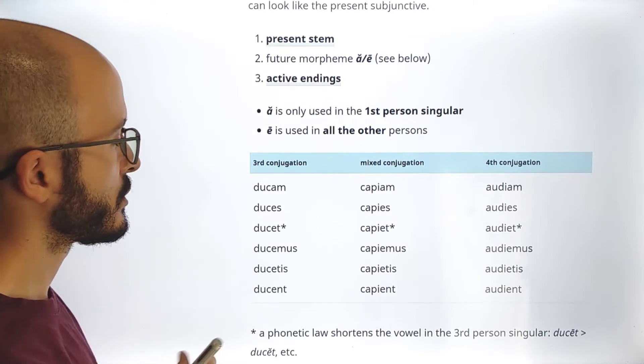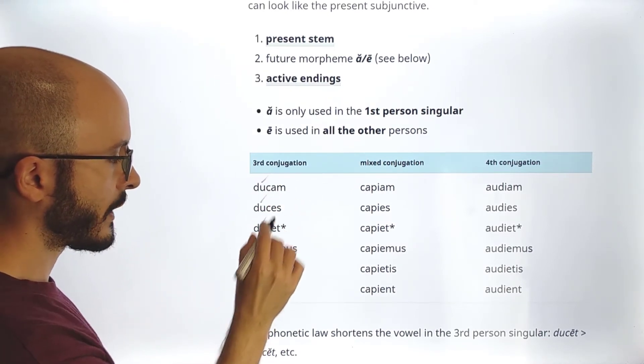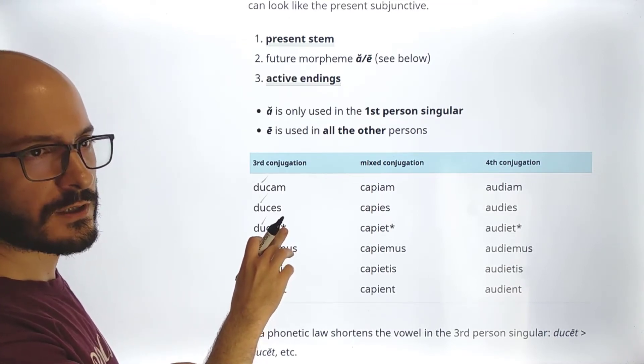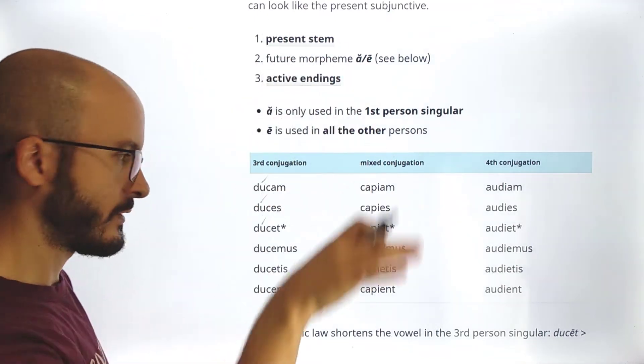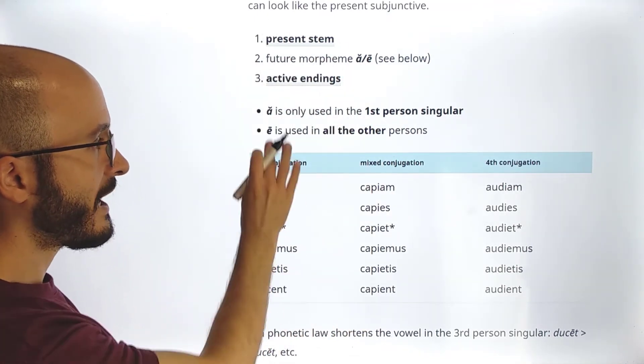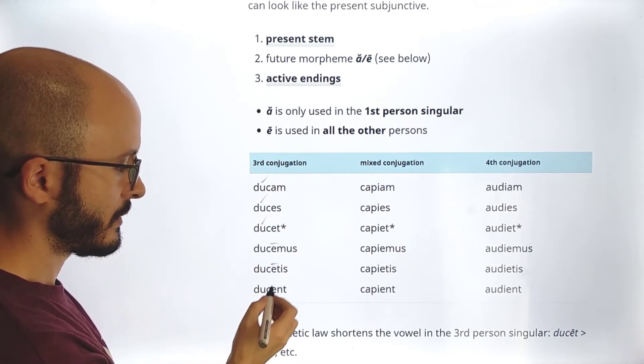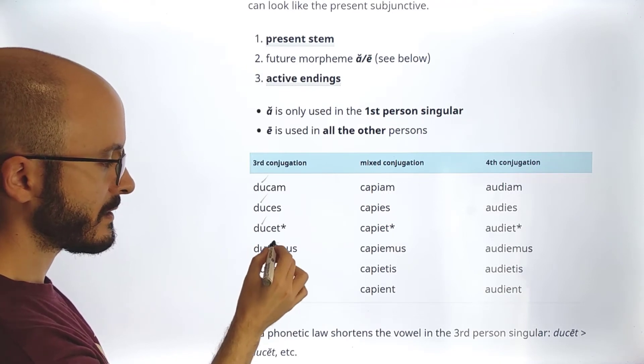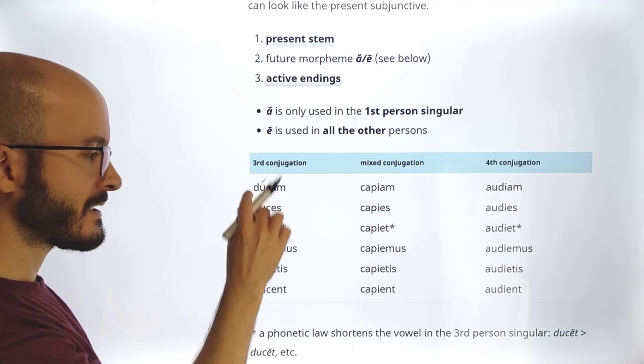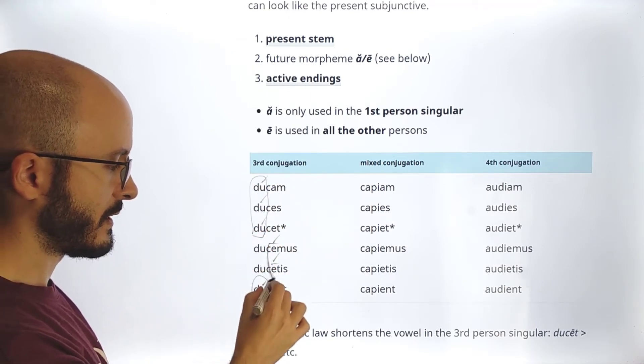So for example, here we have this. So we have ducam, duces, ducet. For this asterisk, you really don't have to worry, okay? This is for a super very future reference. So ducam, duces, ducet. Now here we have this E is this E. So it is ducemus, ducetis, ducent. So here we see that the accent doesn't always go in the same syllable.